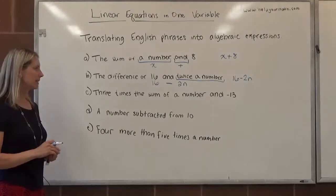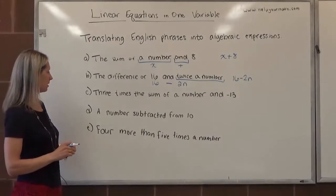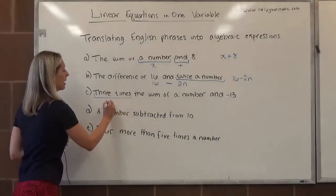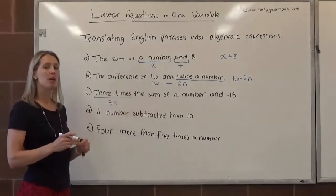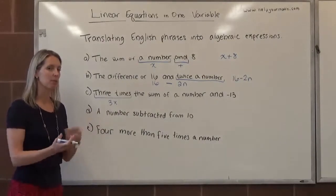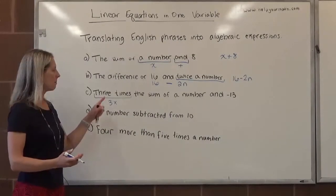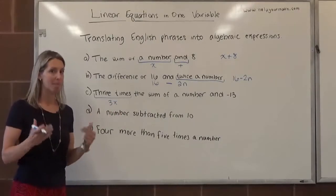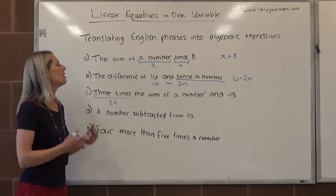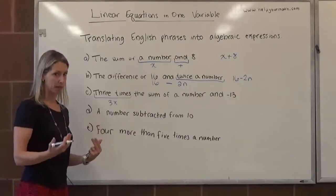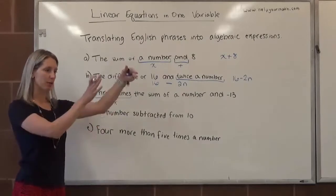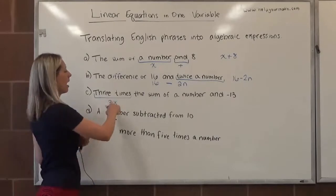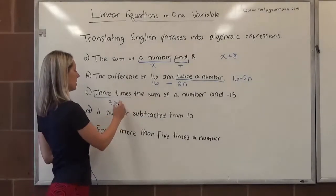Letter c, three times the sum of a number and negative 13. So we have three times, what are we multiplying by three? We are multiplying by three, a sum. Now, order of operations indicates that multiplication is supposed to happen before addition. But here, we want to take the sum and then multiply it by three. So we have to bypass the order of operations, and the only way that we can do that is using grouping symbols.